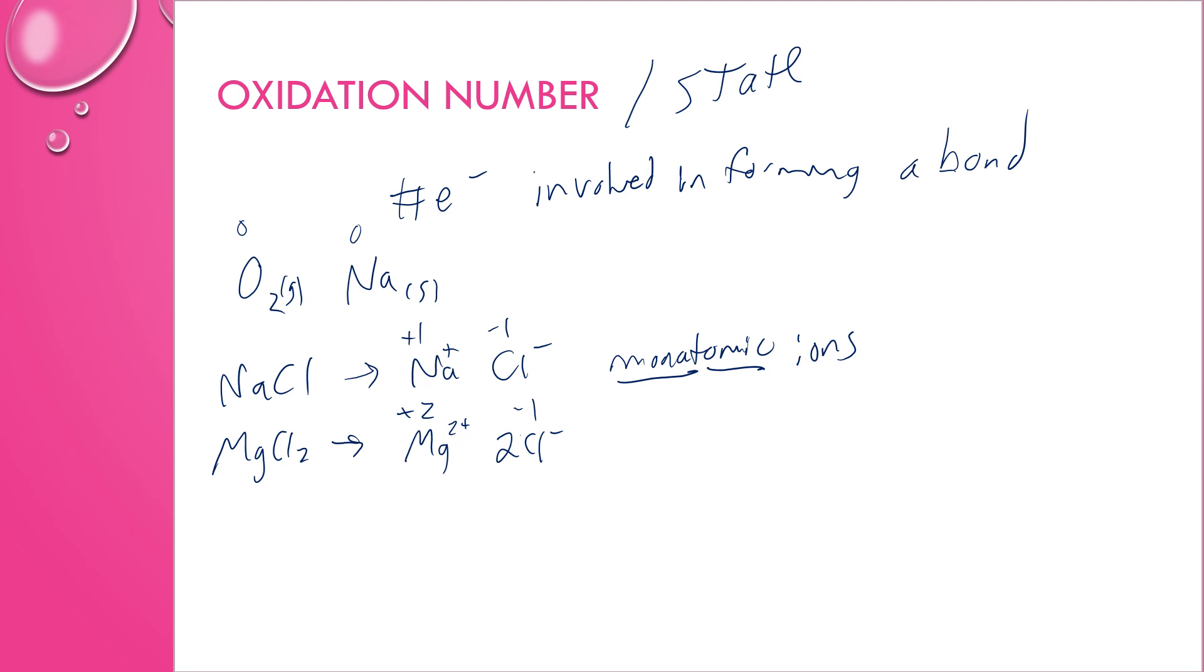After I've checked for elements by themselves and monatomic ions, the next thing I want to check for is oxygen and hydrogen. Oxygen in a compound is negative two, except for peroxides like hydrogen peroxide. We can use some context clues from the hydrogen to realize that the oxygen is not behaving how it normally would. Hydrogen is typically plus one, and oxygen is normally minus two. But in order for this to balance out perfectly, if this is plus two, this one has to add up to minus two. So each oxygen is negative one. In peroxides, oxygen is negative one instead of negative two.